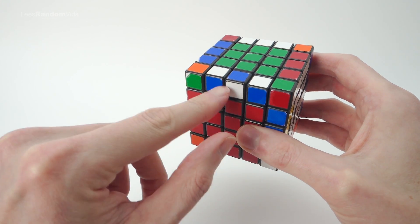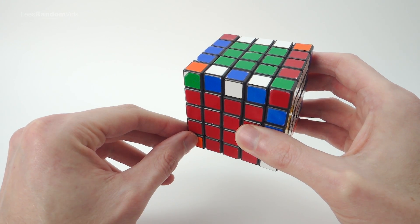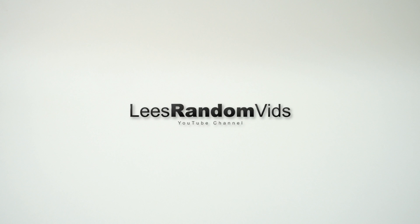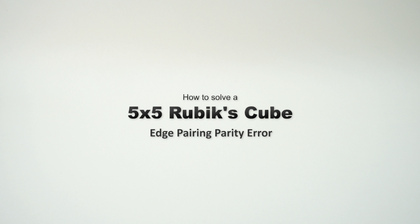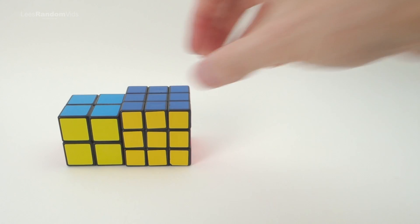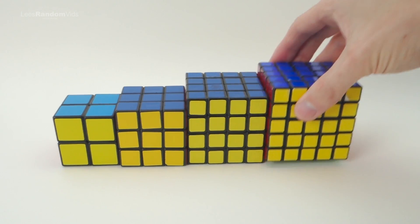In this video I'm going to show you how to solve this parity error that you may run into when solving the edge pieces on a 5x5 Rubik's Cube. Check out my other video showing you how to solve a 2x2 Rubik's Cube, a 3x3, a 4x4 and even a 5x5.